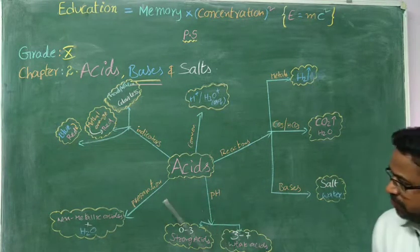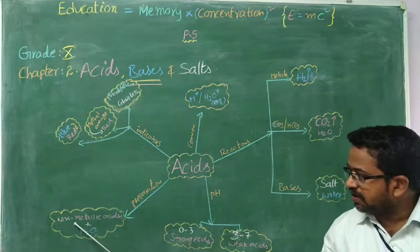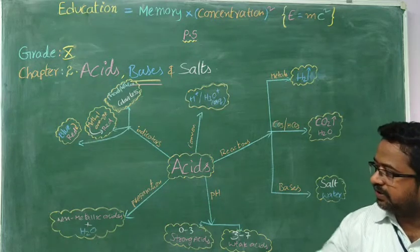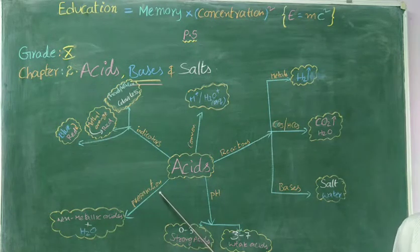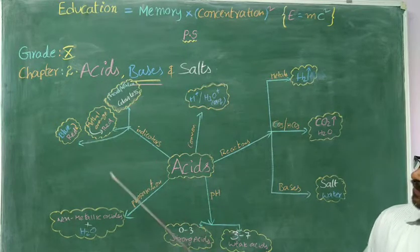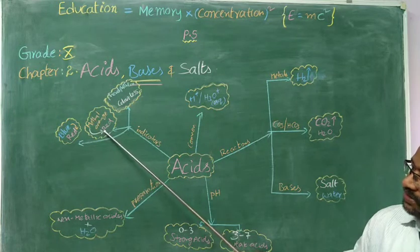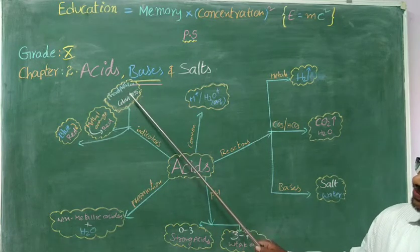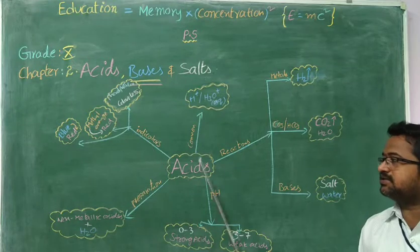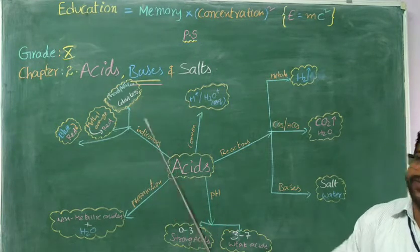Acids. First of all, preparation. How are acids prepared? Non-metallic oxide dissolves in water — that is how acids are prepared. Next, indicators. Blue litmus changes into red. Methyl orange changes into red. Phenolphthalein is colorless. It's about indicators in acidic medium — these are the colors of the indicators.